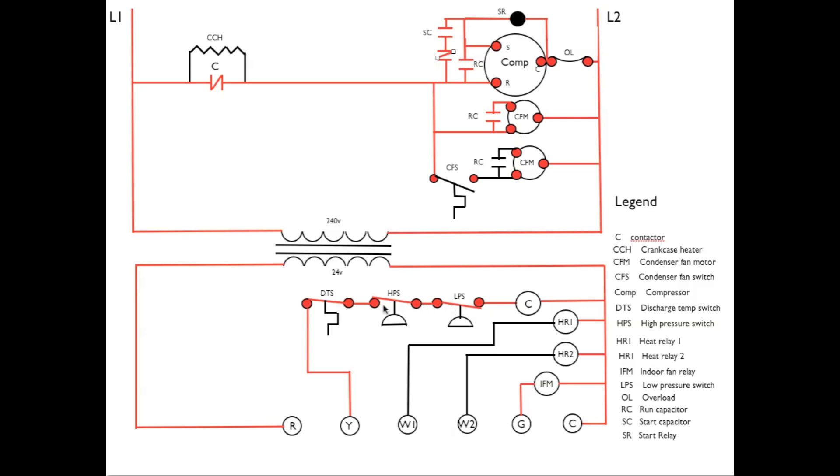These are both refrigerant pressure switches. High pressure switch in case condenser fans fail or something like that, the pressure got too high, it would shut off. And a low pressure switch, if there was a low charge in the system, it would open.